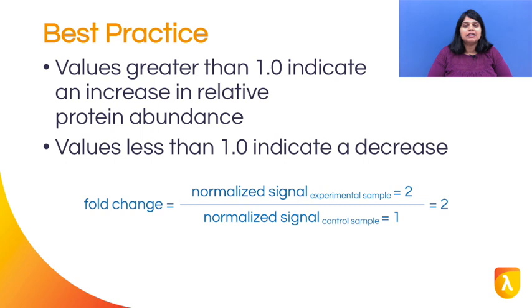The normalized values are 2 and 1 respectively. A fold change value of 2 means there is a 2-fold upregulation of XYZ protein in response to curcumin treatment.